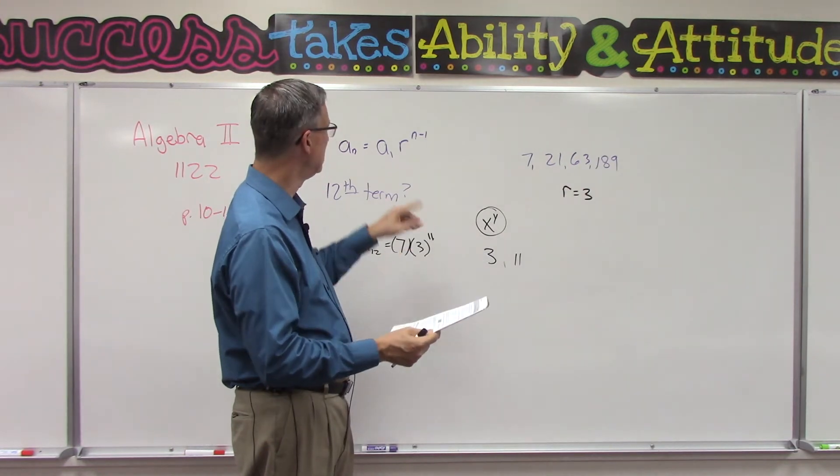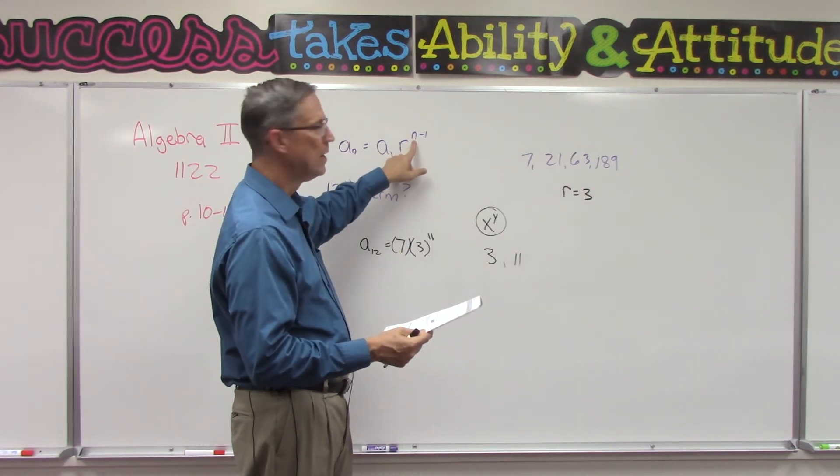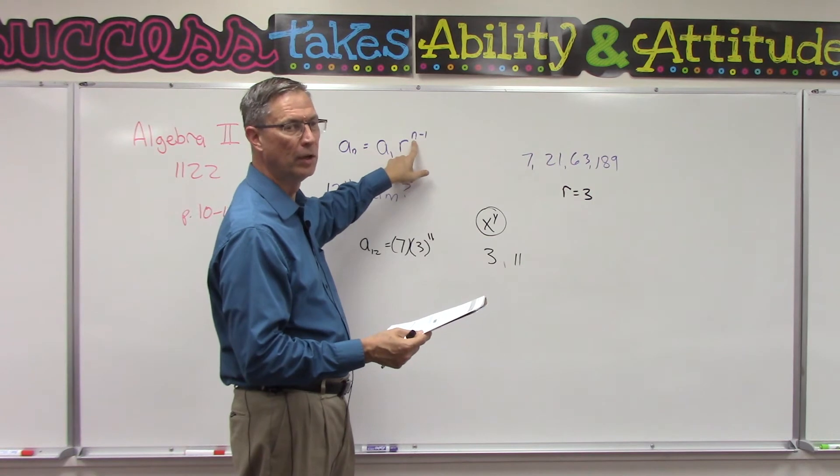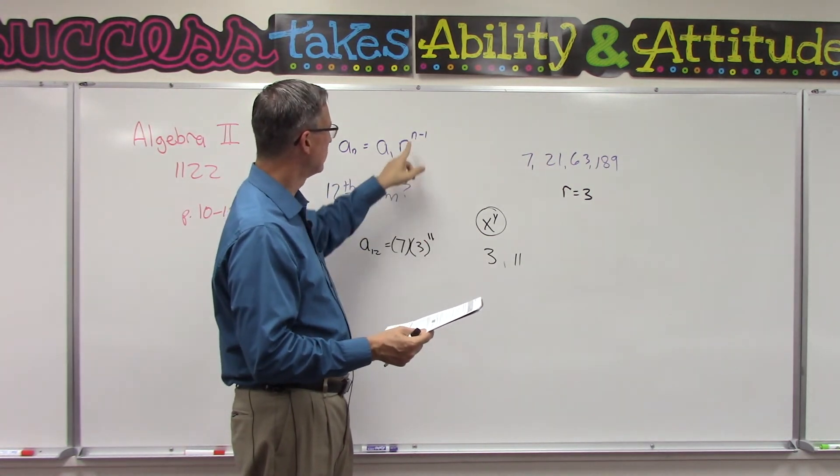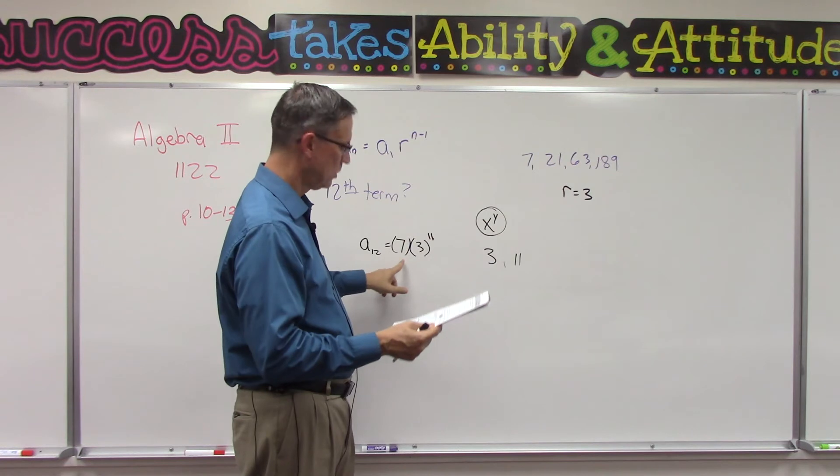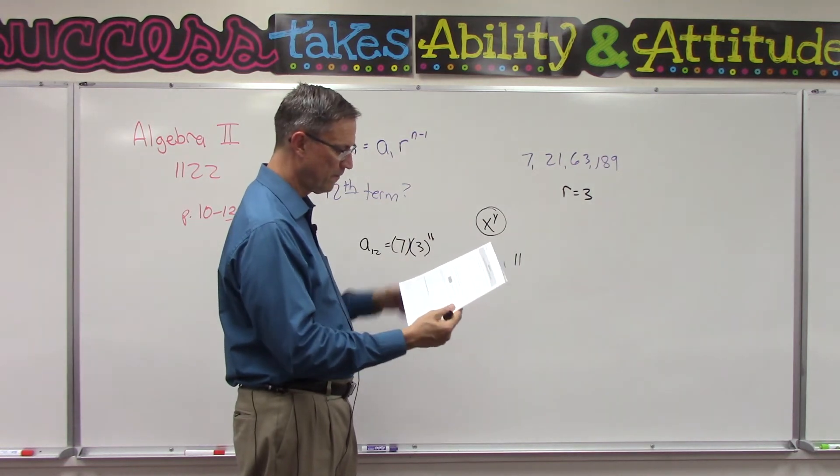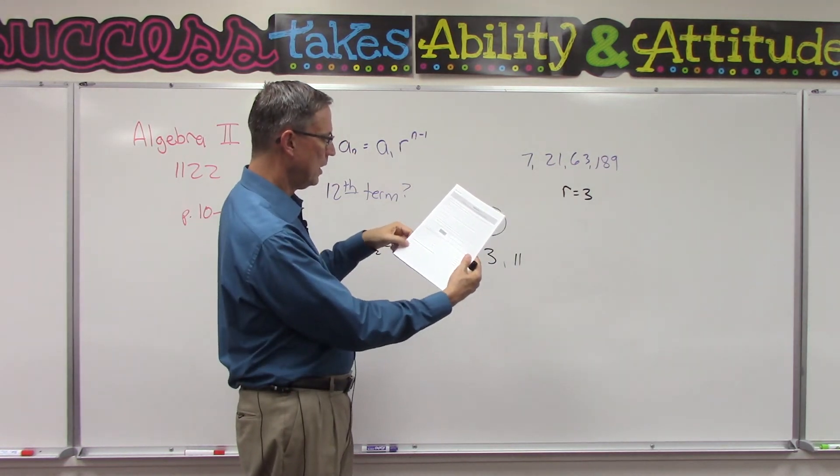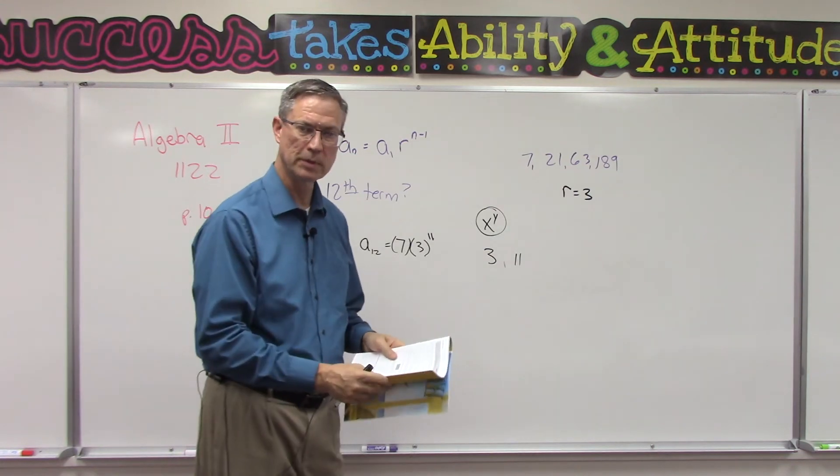For the n—and that tells you which term—and so then actually you'll subtract one from that times the ratio, and multiply that times the first term, which they give you in all those sequences. Does that make sense?